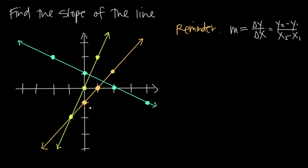If we look at the orange line, we can figure it out pretty easily. Let's take this point right here. At this point, x is equal to 0 — this is along the y-axis, so x is equal to 0 — and y is equal to negative 1, so this is the point (0, -1). At this other point, which is also on the orange line, x is 1 because we're out a distance of 1 along the x-axis, and y is 0 since we're right on the x-axis.